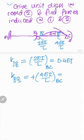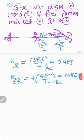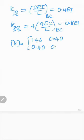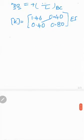So the stiffness matrix K is a 2×2 matrix. Taking EI outside, the matrix is: first column [1.46, 0.40] and second column [0.40, 0.80]. Note that K12 equals K21, as expected. This completes the stiffness matrix. Next is step three: calculating the locking forces.